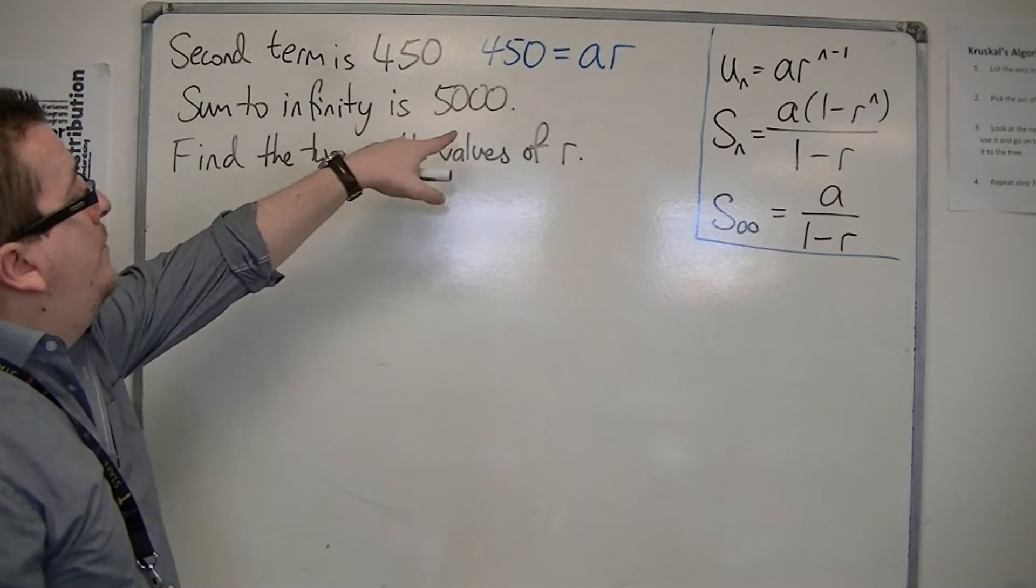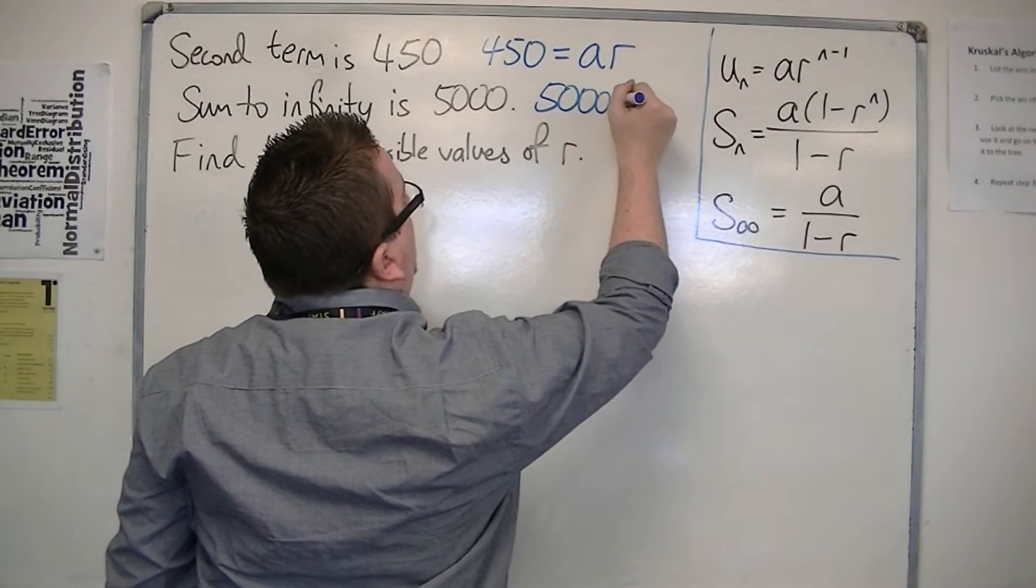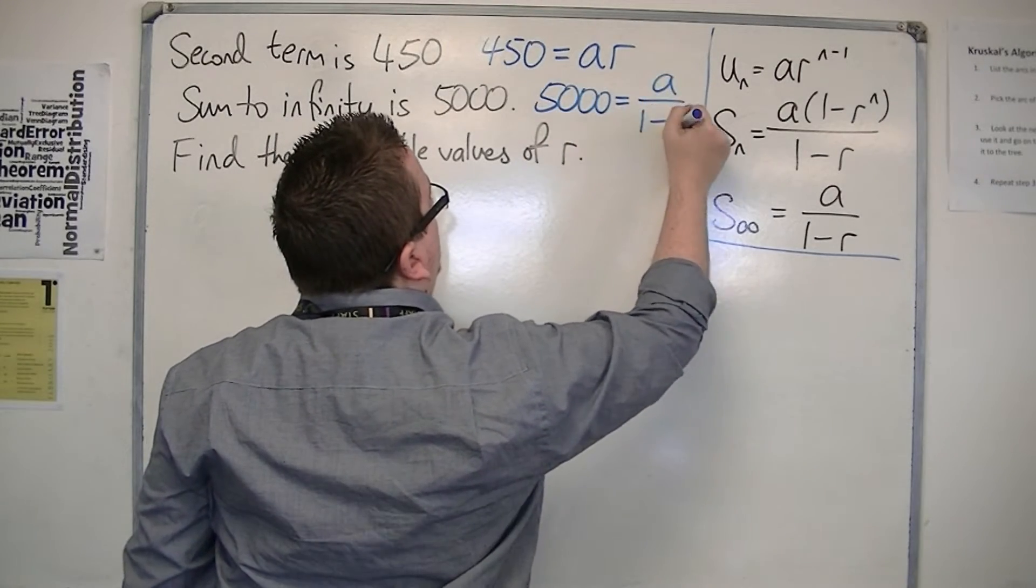If the sum to infinity is 5000, then using this formula, 5000 equals a over 1 minus r.